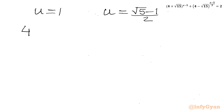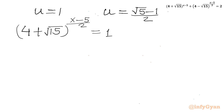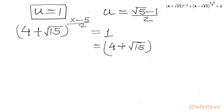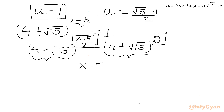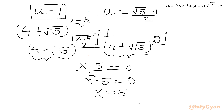We have two u values: u = 1 and u = (√5 − 1)/2. Substituting back our substitution for u = 1: (4 + √15)^((x−5)/2) = 1. Since the bases are the same, we equate the exponents: (x − 5)/2 = 0, so x − 5 = 0, giving x = 5 as the first real solution.